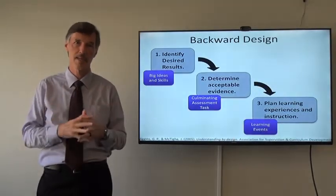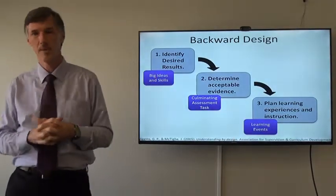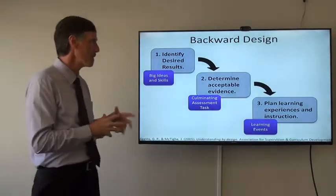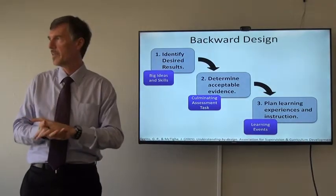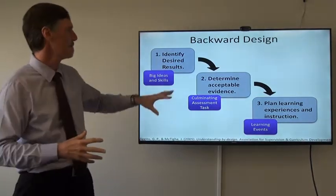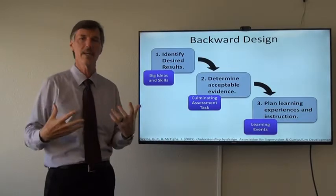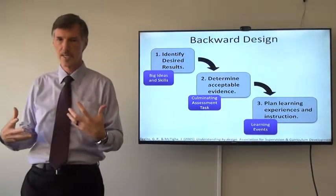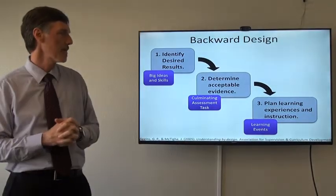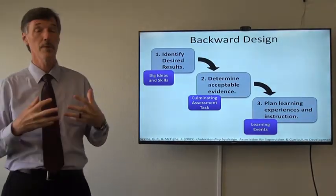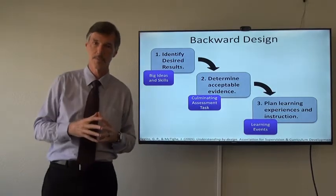This is our second step in the Wiggins-McTighe backward design model that we use frequently. We previously talked in a video about writing effective learning outcomes. This is the second step at looking at evidence or assessment, and then we'll talk later about what we do with those in creating active learning environments.